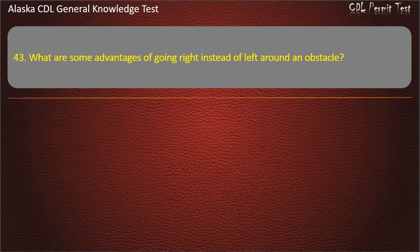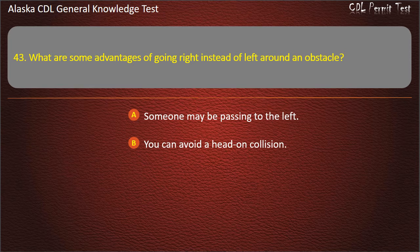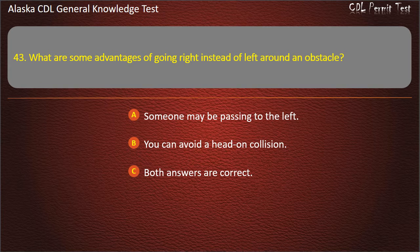Question 43. What are some advantages of going right instead of left around an obstacle? Someone may be passing to the left, you can avoid a head-on collision, or both answers are correct. Answer: Both answers are correct.